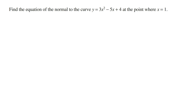Whenever we need to find the equation of a line at a given point we need to use the general rule: y minus y1 is equal to m times x minus x1, where x1 and y1 is a point that lies on the line and m is going to be the gradient.